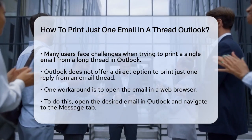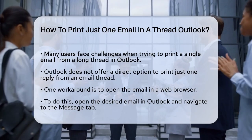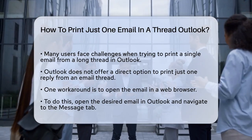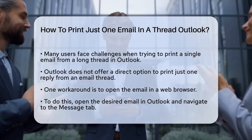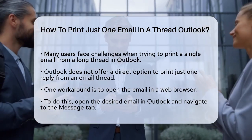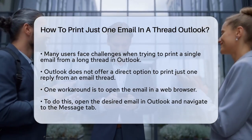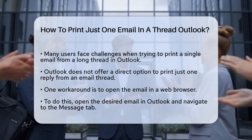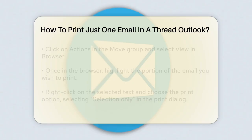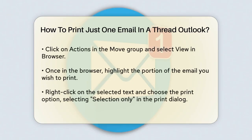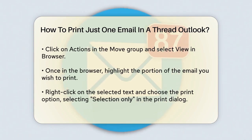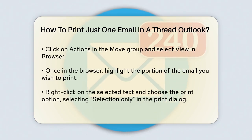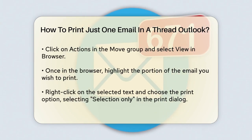However, there are a few workarounds you can use. One method involves opening the email in your web browser. Open the email you want to print in Outlook. Go to the Message tab, then to the Move group, and click on Actions. Select View in Browser.